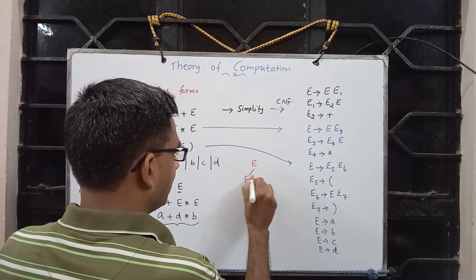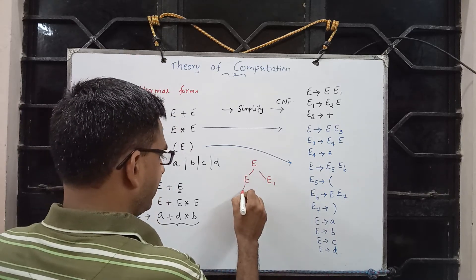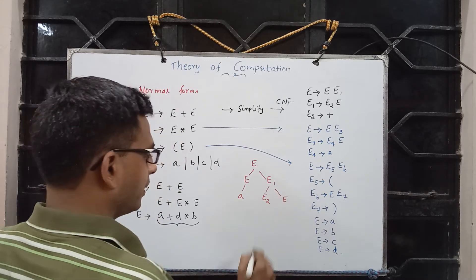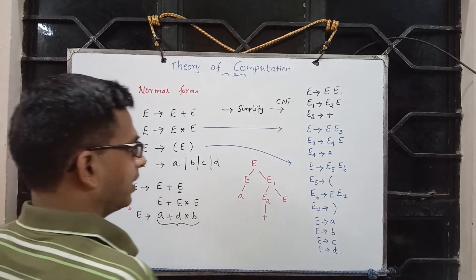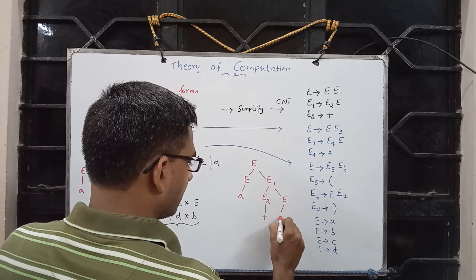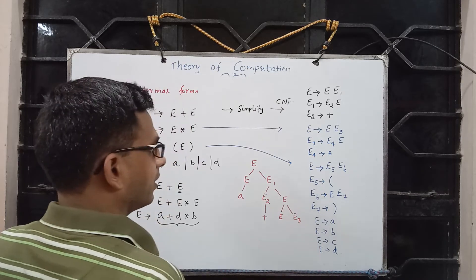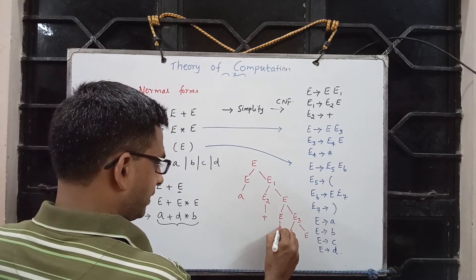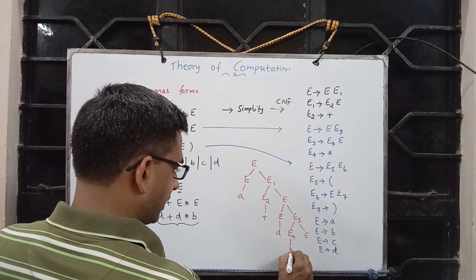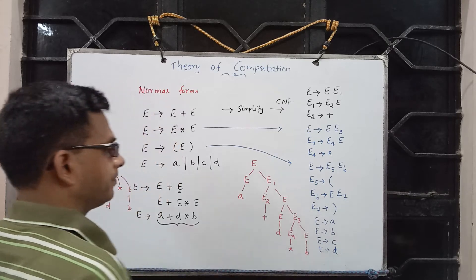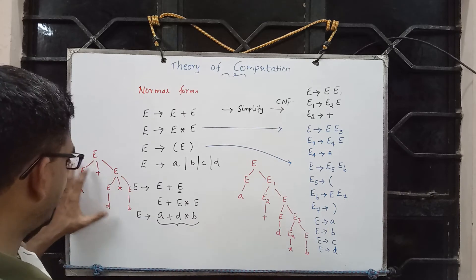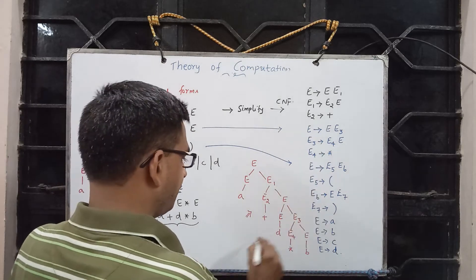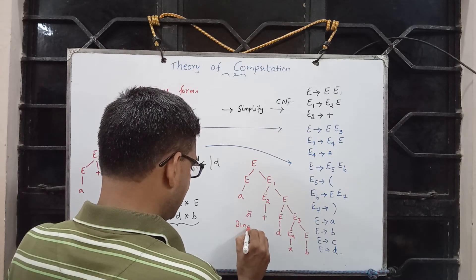In the CNF derivation: E implies E E1, this E implies A; E1 implies E2 followed by E; E2 implies plus; then E3 implies E4 E, for that E we get D, for E4 we get star, and for the last E we get B. For this example it turns out to be a ternary tree, but in general derivation using CNF will always give us a binary tree.